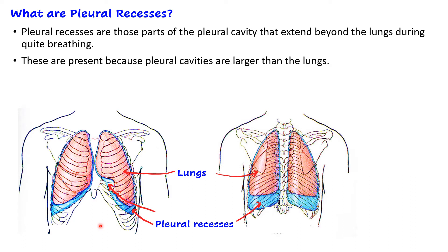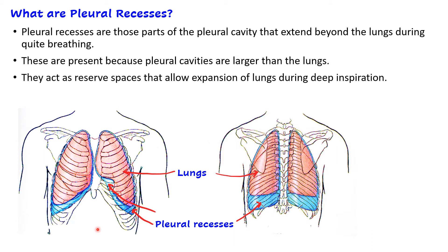Pleural recesses are present because the pleural cavities are much larger in certain areas than the lungs. Their significance is that they act as reserved spaces that allow expansion of the lungs during deep inspiration. During quiet breathing, these areas are not occupied by the lungs, but when you do deep inspiration, they allow further expansion of the lungs.